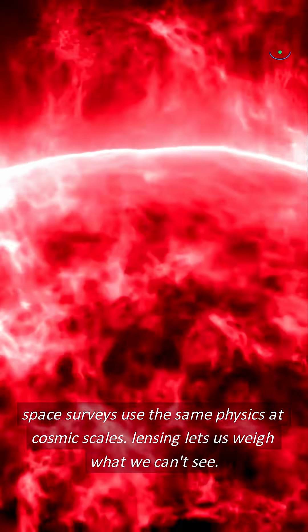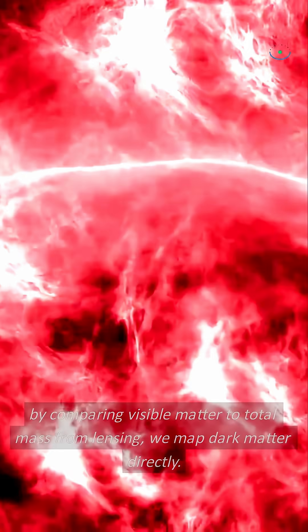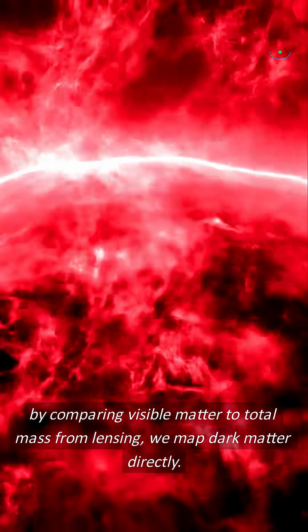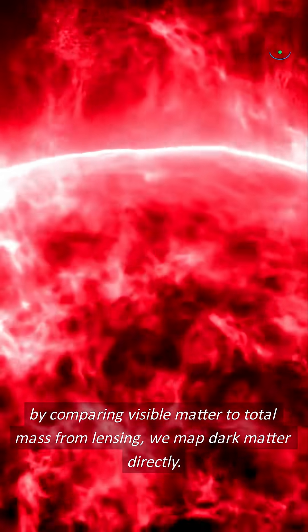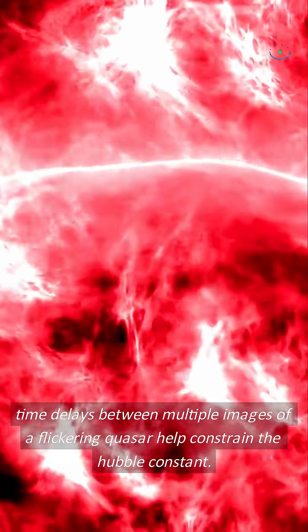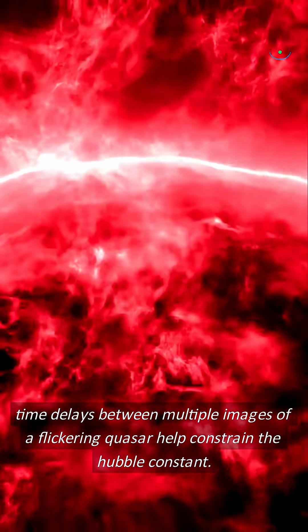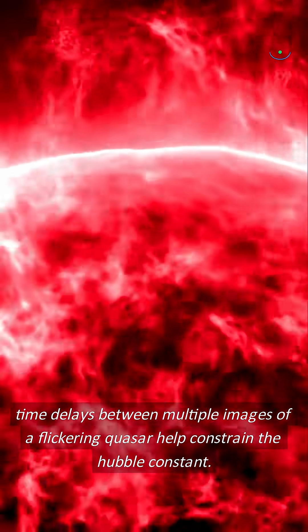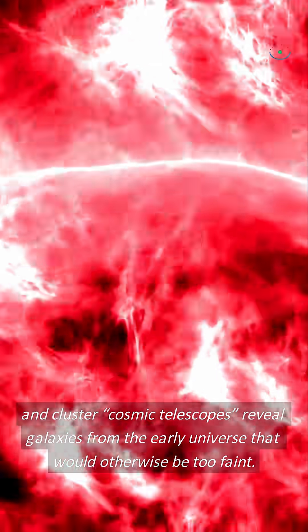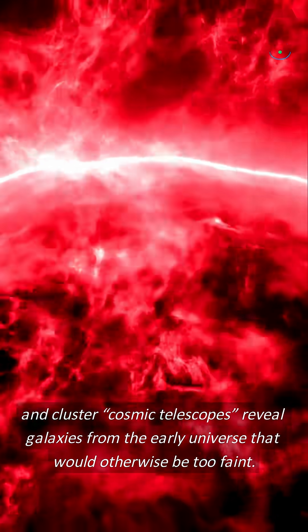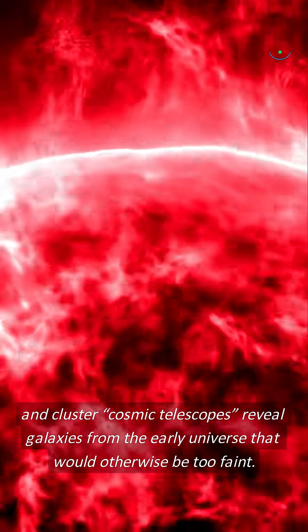Lensing lets us weigh what we can't see. By comparing visible matter to total mass from lensing, we map dark matter directly. Time delays between multiple images of a flickering quasar help constrain the Hubble constant, and cluster cosmic telescopes reveal galaxies from the early universe that would otherwise be too faint.